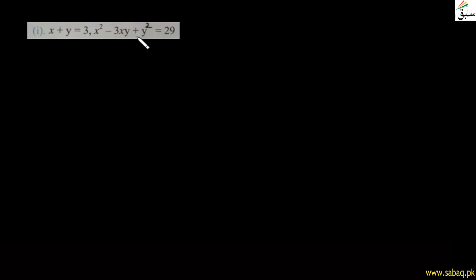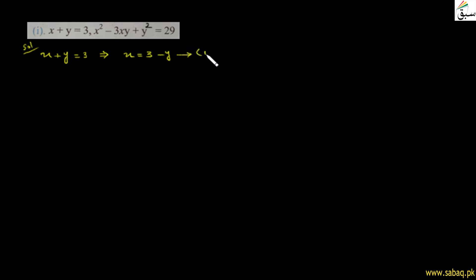اگلا سوال: x + y = 3 (linear equation) اور x² − 3xy + 2y² = 29 (quadratic equation) دی گئی ہیں۔ یہ simultaneous equations ہیں، انہیں solve کرنا ہے۔ Linear کو equation 1 اور quadratic کو equation 2 کہتے ہیں۔